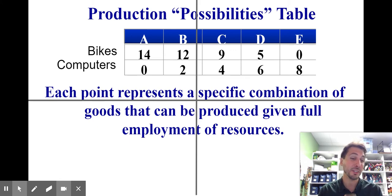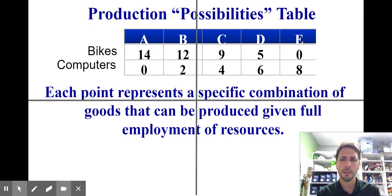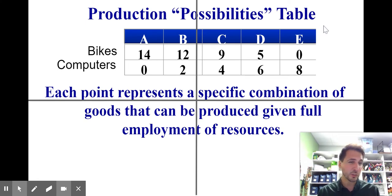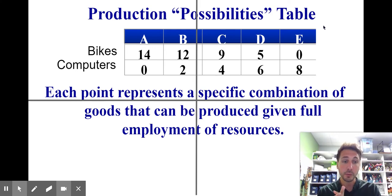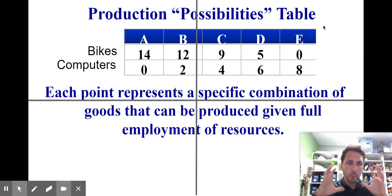Let's take a look at the production possibilities table, and then we'll get to the graph, or the curve, in a second. This table shows us five points: A, B, C, D, and E. Each of these points shows a different production combination that this nation can produce if they employ all of their resources — fully employed. That means every piece of land is being used, every capital asset is being used, every laborer is employed, and every entrepreneur is busy. If we're employing all of those resources, this is what we can produce.